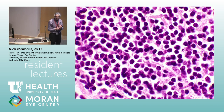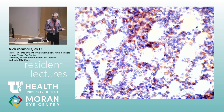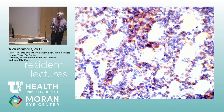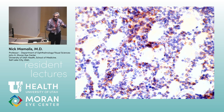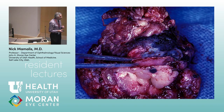On immunoperoxidase staining this is positive for monoclonal lymphocytes. In the orbit, the most common type are B lymphocytes — extra-zonal marginal zone B lymphocytes. It's very rare to have a T-cell lymphoma of the orbit. These are usually a moderate- to low-grade B-cell lymphoma.